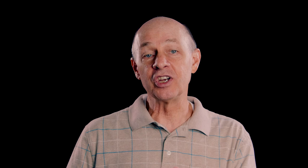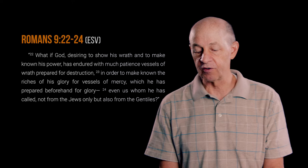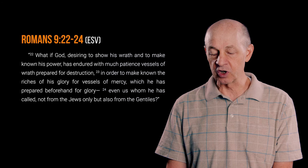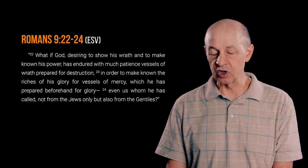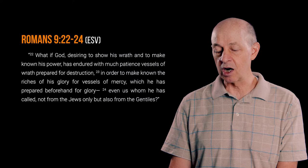Let me give an example from Romans chapter 9, verses 22 through 24. In this passage, the English Standard Version follows the clause structure of the Greek quite closely. Here is what it says: 'What if God, desiring to show his wrath and to make known his power, has endured with much patience vessels of wrath prepared for destruction, in order to make known the riches of his glory for vessels of mercy, which he has prepared beforehand for his glory, even us whom he has called not from the Jews only, but also from the Gentiles?'